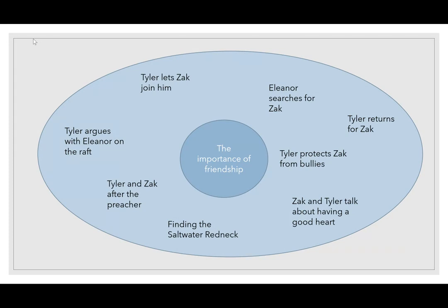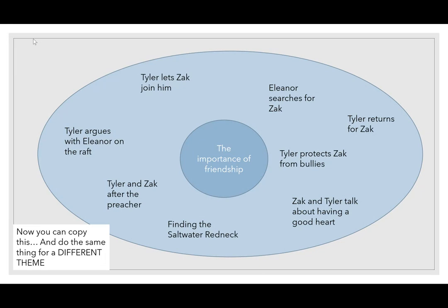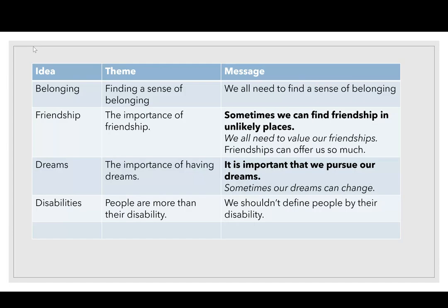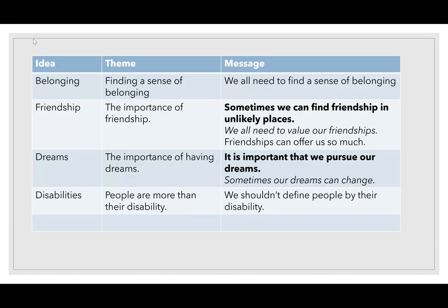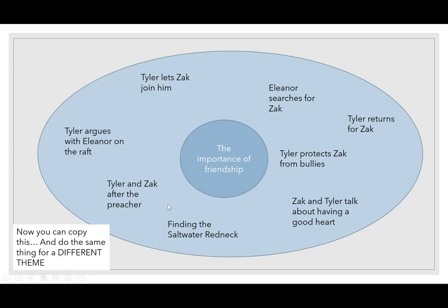So now you have one theme with a whole lot of evidence — a whole lot of scenes that show it. What you're going to do now is do the exact same thing for a different theme. These are the themes in the middle column — pick one of these, or if you've got your own, definitely pick that. You're going to try to think of evidence, which means scenes or examples or events that help to show that theme.